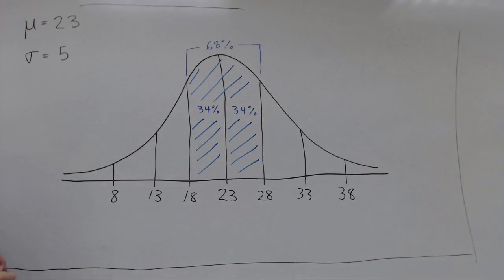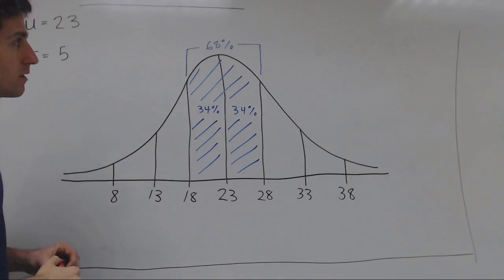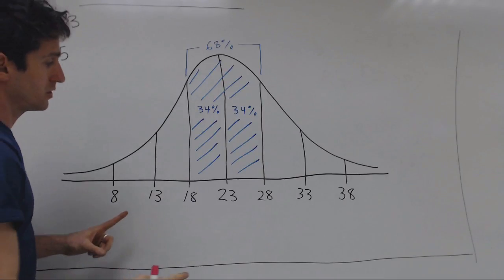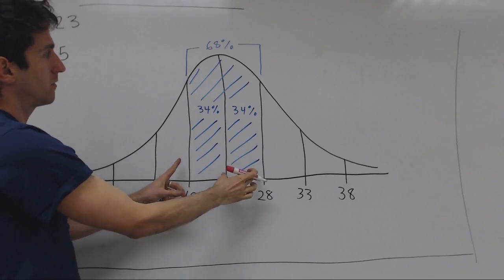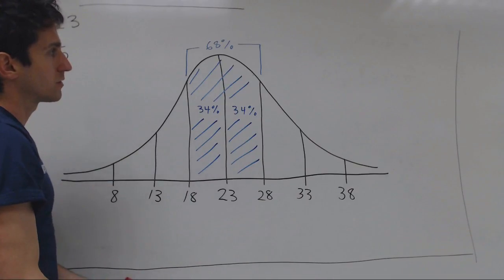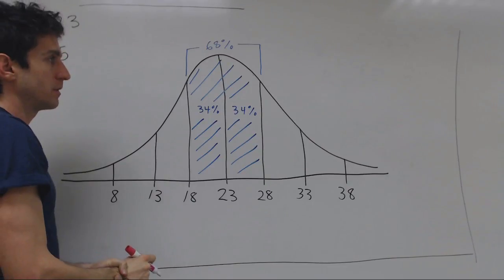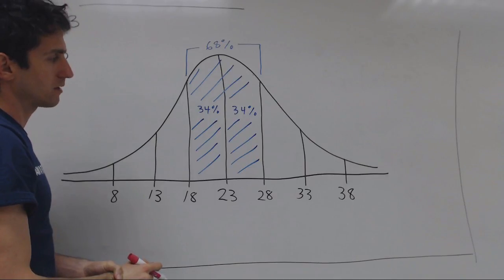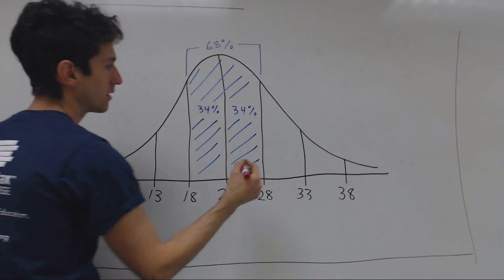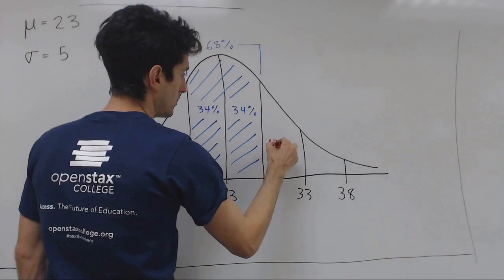According to the empirical rule, 95% of the population is within two standard deviations. We've already accounted for 68%. So subtracting 68% from 95% leaves us with 27%. And we split that into two, and we get 13.5%.